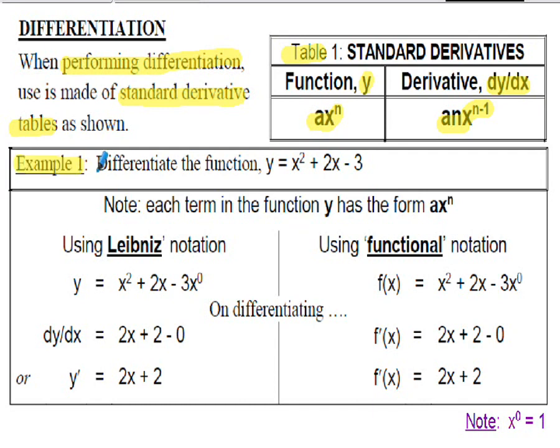In Example 1, we're asked to differentiate the function y = x² + 2x − 3. Each of those terms is effectively of the form ax^n. We're going to solve Example 1 using both notations — Leibniz and function notation — so you can see the comparison, because we'll be using both notations in the work that follows.